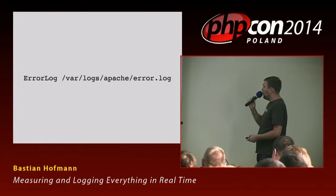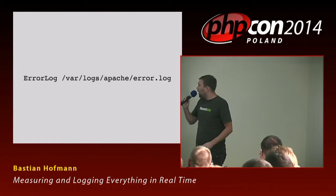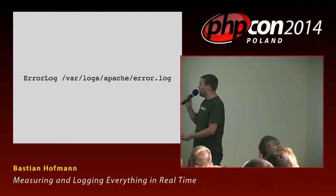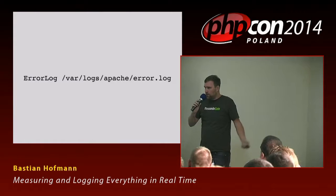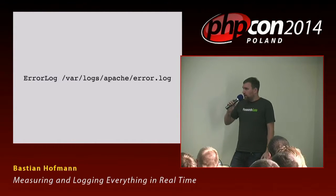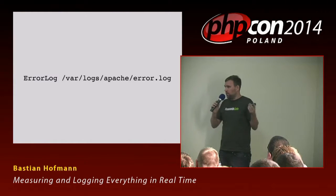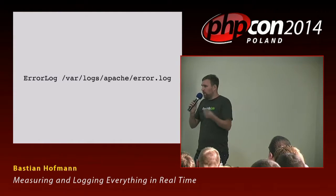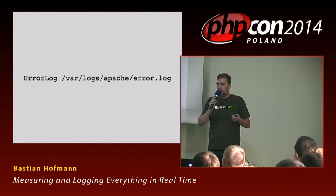Error logs are usually configured in the web server. For Apache, for example, the default is the error log. Automatically by default, PHP logs all errors, warnings, and notices depending on settings, and all unhandled exceptions go in there automatically. So you don't have to do anything — you can have a look in there and see if something is broken and your users may have seen an error page.